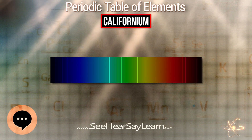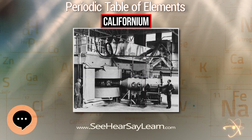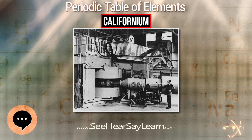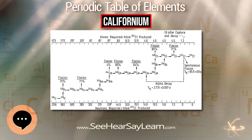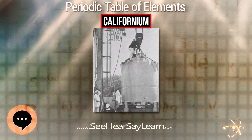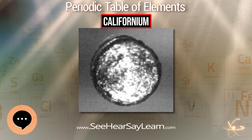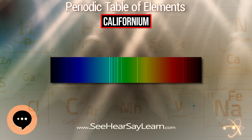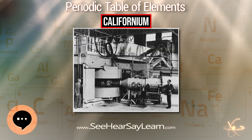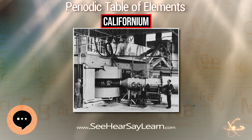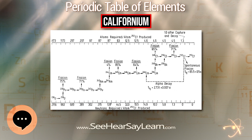Californium reacts when heated with hydrogen, nitrogen, or a chalcogen. Reactions with dry hydrogen and aqueous mineral acids are rapid. Californium is only water-soluble as the californium cation; attempts to reduce or oxidize the plus-three ion in solution have failed. The element forms a water-soluble chloride, nitrate, perchlorate, and sulfate, and is precipitated as a fluoride, oxalate, or hydroxide.